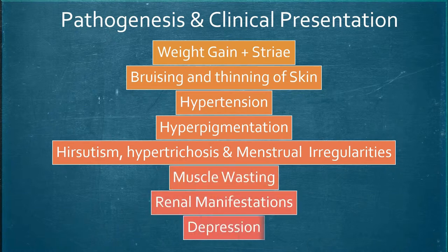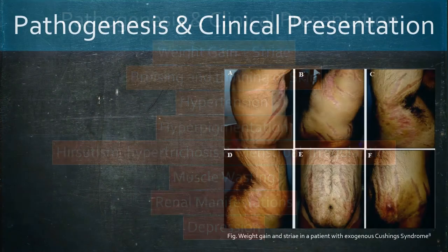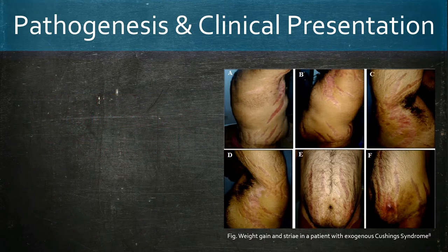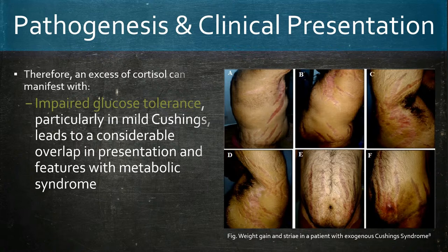Cortisol plays a role in increasing blood sugar through gluconeogenesis. In Cushing's syndrome, this results in weight gain, diabetes mellitus, and impaired glucose tolerance. With impaired glucose tolerance, especially in mild Cushing's syndrome, this leads to a considerable overlap in presentation with metabolic syndrome, which is an important differential.